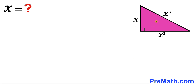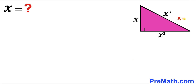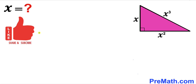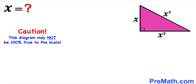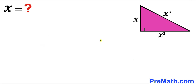Welcome to pre-math. In this video we have got a right triangle as you can see in this diagram, whose side lengths are represented by x, x squared, and the hypotenuse is x cubed. Our task is to calculate the value of x. Please don't forget to give a thumbs up and subscribe, and keep in mind that this figure may not be 100% true to scale. Let's go ahead and get started.